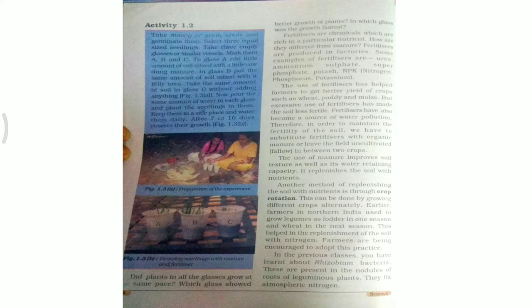Take moong and gram seeds and germinate them. Select three equal-sized seedlings. Take three empty glasses or similar vessels and mark them A, B, and C. In glass A, add soil mixed with a little cow dung manure. In glass B, add soil mixed with a little urea fertilizer. In glass C, add soil without adding anything extra.